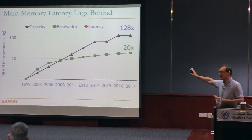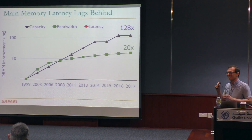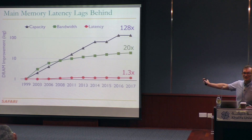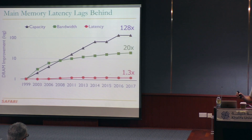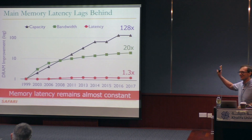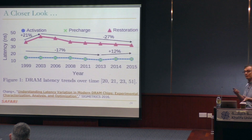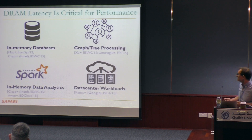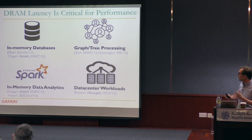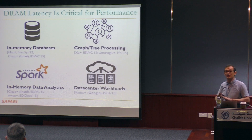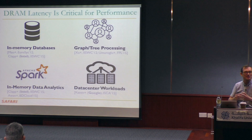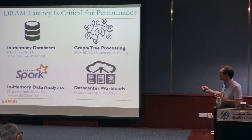If you look at latency, the curve is basically flat. It's only a 30% improvement in 18 years, which is not a good achievement, especially if you want to design real-time systems that can operate on data intelligently. Main memory latency remains almost constant, and some of the latencies are actually increasing. Many applications are latency critical. In many of these applications, latency, bandwidth, and capacity are a very interesting mix in terms of efficiency — sometimes limited by bandwidth, sometimes by capacity, sometimes by latency. You cannot ignore any of them in data-intensive applications.